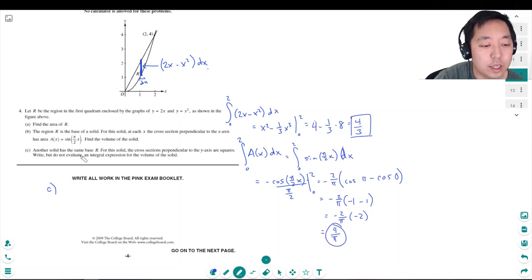Part c: Another solid has the same base R. For this solid, the cross-sections perpendicular to the y-axis are squares. Write, but do not evaluate, the integral expression for the volume of the solid. Well, the volume—